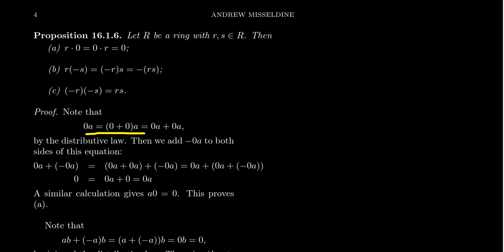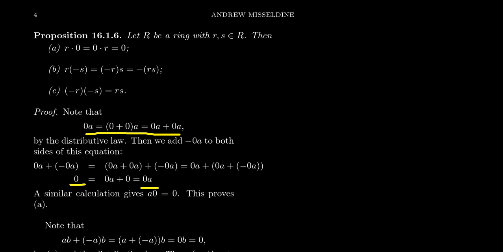This equation now lives in an additive group, so we can subtract zero·a from both sides. Whatever zero·a is as an element of the ring, it has an additive inverse. Adding that inverse cancels the right-hand side, and since we're in an abelian group, we get zero equals zero times a. Therefore zero equals zero·a, proving property A. Using left distribution, a similar argument shows a·zero equals zero. So zero is a dominant element inside our ring.